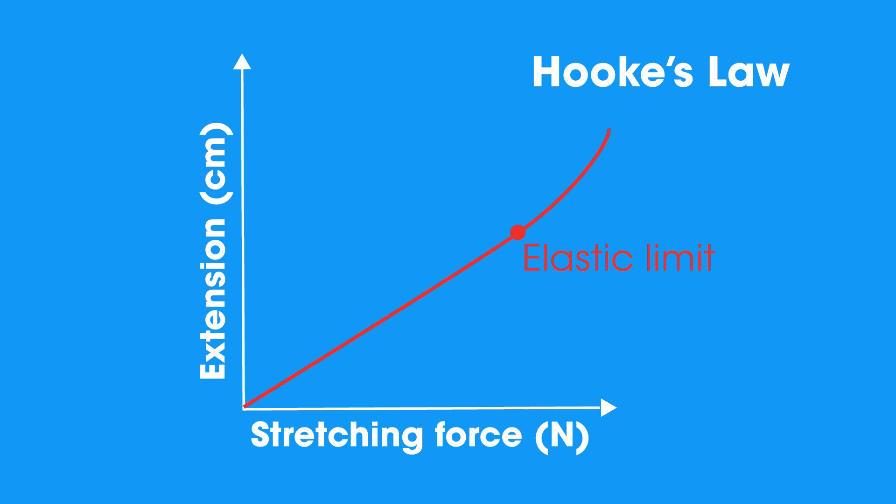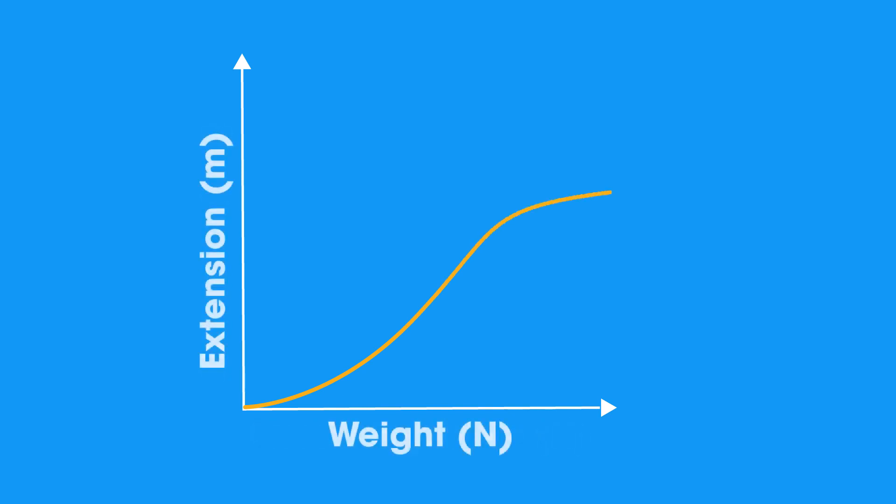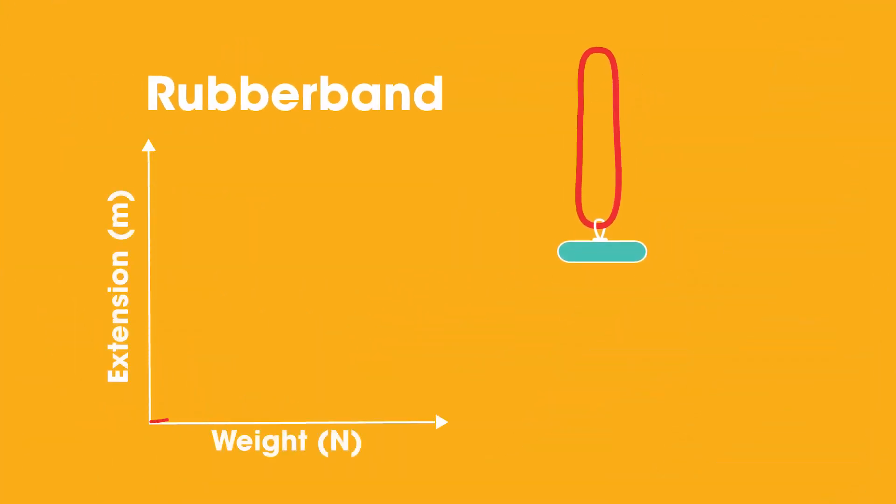There is a linear relationship between force and extension. Here's the graph we get if we perform the same experiment, but use a rubber band instead of a spring. The result with a rubber band does not give a straight line graph.